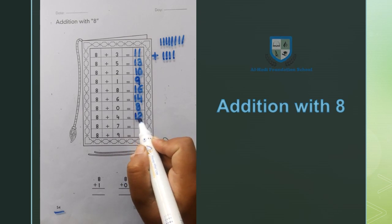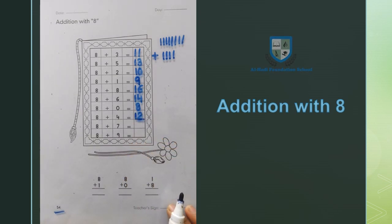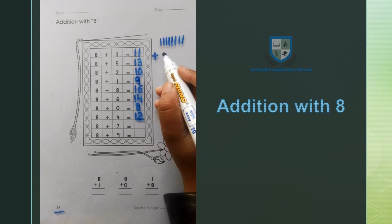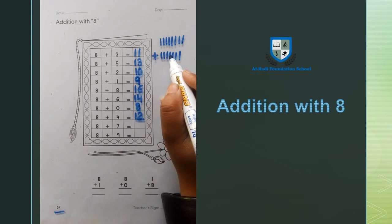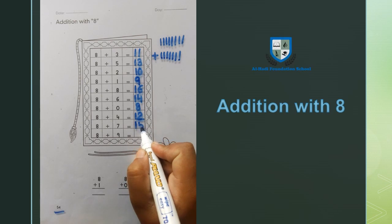Now we will add 8 plus 4 equals 12. Next, 8 plus 7. 1, 2, 3, 4, 5, 6, 7. 8, 9, 10, 11, 12, 13, 14, 15. 8 plus 7 equals 15.